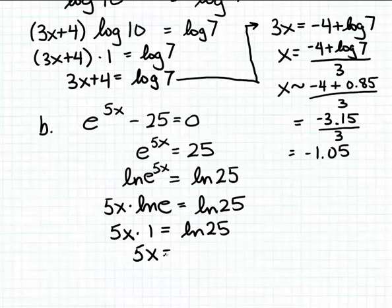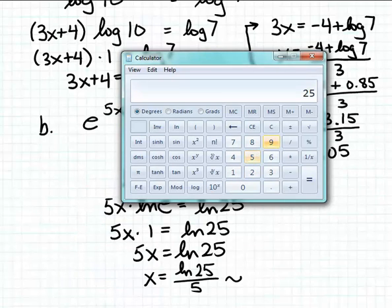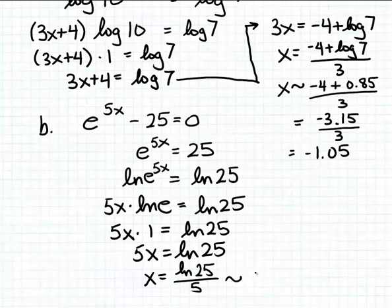That simplifies to 5x is equal to the natural log of 25. Dividing both sides by 5, we get x is equal to the natural log of 25 divided by 5. Using a calculator, the natural log of 25 is about 3.22 rounded to two decimal places. Dividing by 5 gives a decimal approximation for the solution of approximately 0.64.